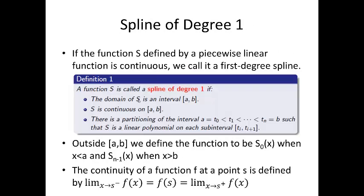So, let's take a look at the formal definition of a degree 1 spline. If the function s defined by a piecewise linear function is continuous, we call it a first degree spline. Function s is called a spline of degree 1, if the domain of s is in the interval [a,b], s is continuous on that interval, and there is a partitioning of it, such that s is a linear polynomial on each subinterval. Outside of [a,b], we define the function to be s0 of x, the first one, when x is less than a, and sm minus 1 of x, when x is greater than b at the last point. The continuity of a function f at a point s is defined by taking the limit at the left hand side, and seeing if it's equal to the limit at the right hand side. So, basically we need the function to be continuous.